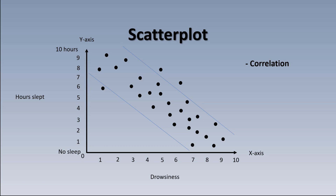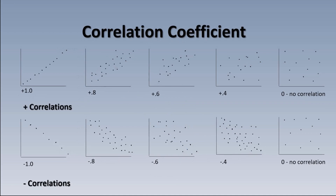Correlational studies measure if two variables have a relationship and how strong that relationship is. There is a way to measure the strength of the relationship between two or more variables — it's called the correlation coefficient. This gets more into statistics, so I'm not going to give you the mathematical formula used to calculate it, and you don't really need to know how to calculate it in most general psychology classes anyway.